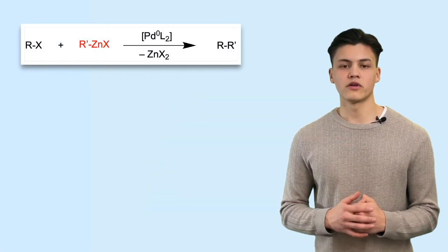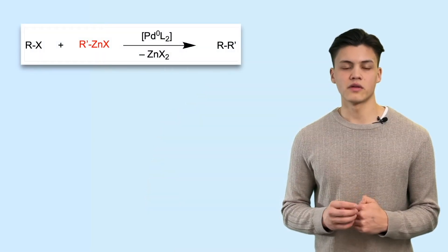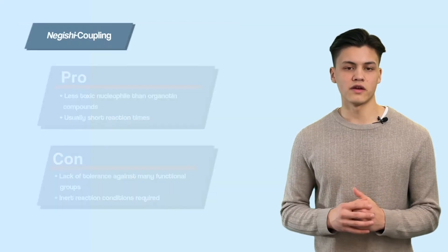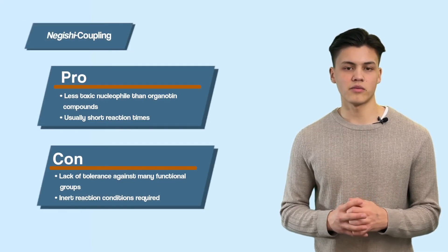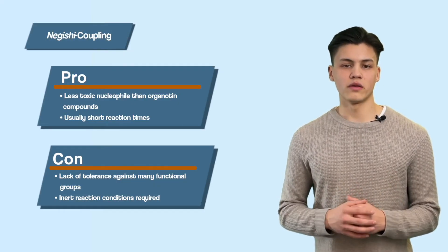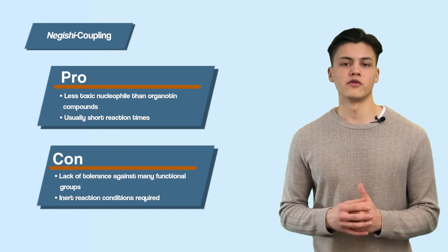If we want a slightly less reactive organometallic species, we can talk about the Negishi cross-coupling reaction. It uses organozinc reagents, which are slightly less reactive than Grignard reagents, but also don't work very well with many functional groups.